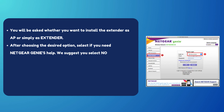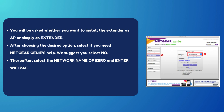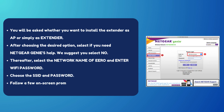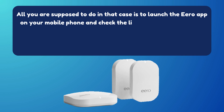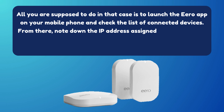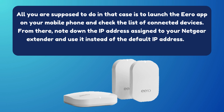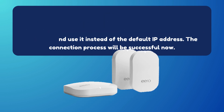We suggest you select No. Thereafter, select the network name of Eero and enter the Wi-Fi password. Choose the SSID and password, then follow a few on-screen prompts. If needed, launch the Eero app on your mobile phone and check the list of connected devices. From there, note down the IP address assigned to your Netgear extender and use it instead of the default IP address. The connection process will be successful now.